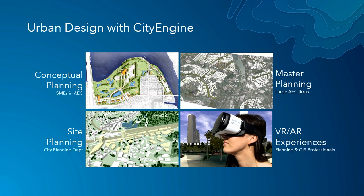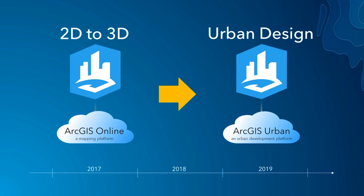CityEngine is evolving toward a more specialized urban design tool. In the past, we talked about it as a tool for going from 2D data to 3D data integrated with the ArcGIS platform. Now we're positioning it as an urban design tool that touches ArcGIS Urban, our web-based solution for urban planning, and is specifically designed to interact and engage with that platform.